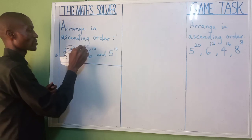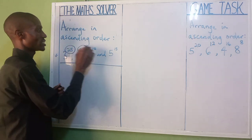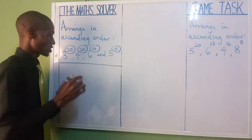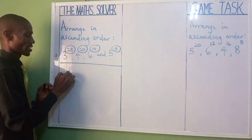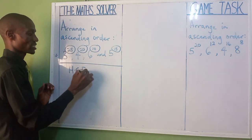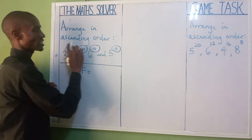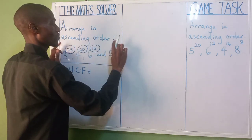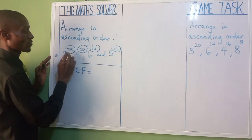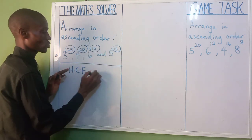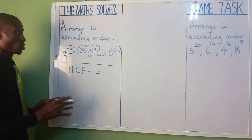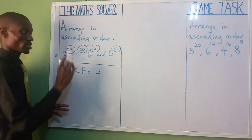The first thing you have to do is look at the powers: 25, 20, 10, and 15. You need to find the HCF — the highest common factor. If you check, the HCF of 25, 20, 10, and 15 is 5. That is the highest common factor here.